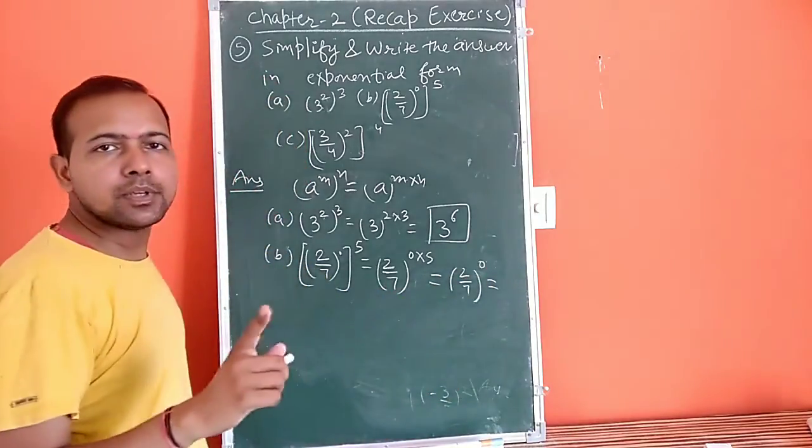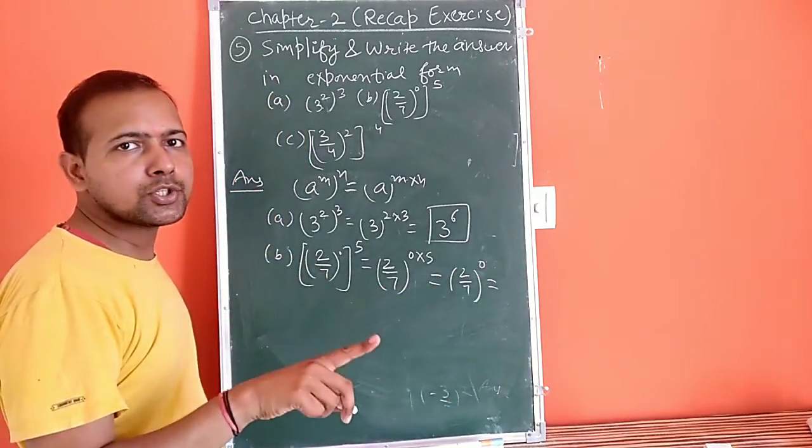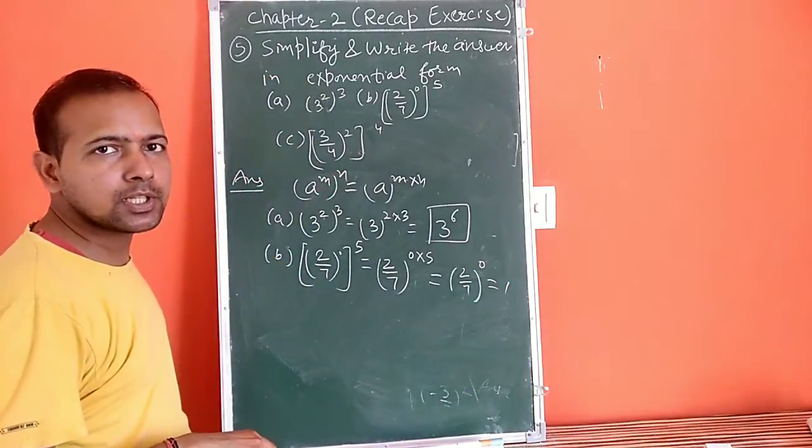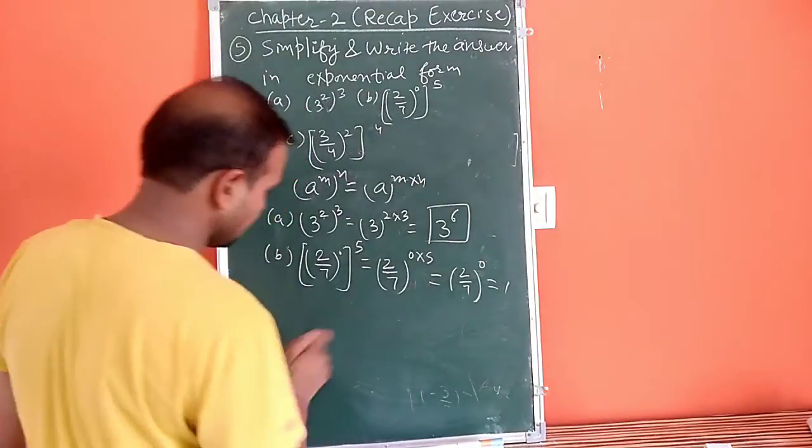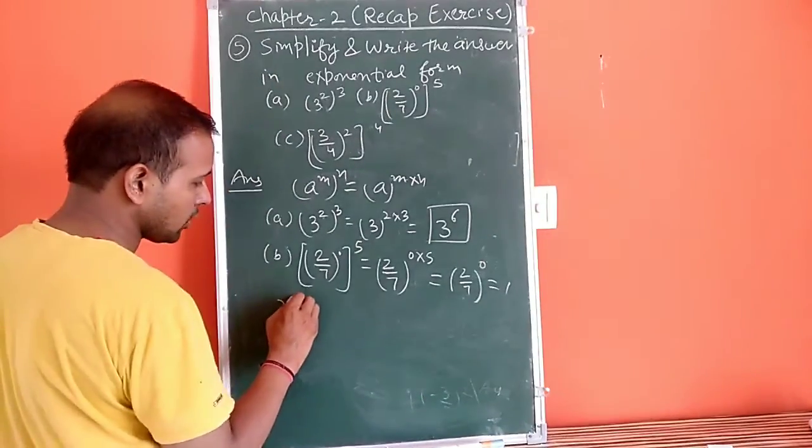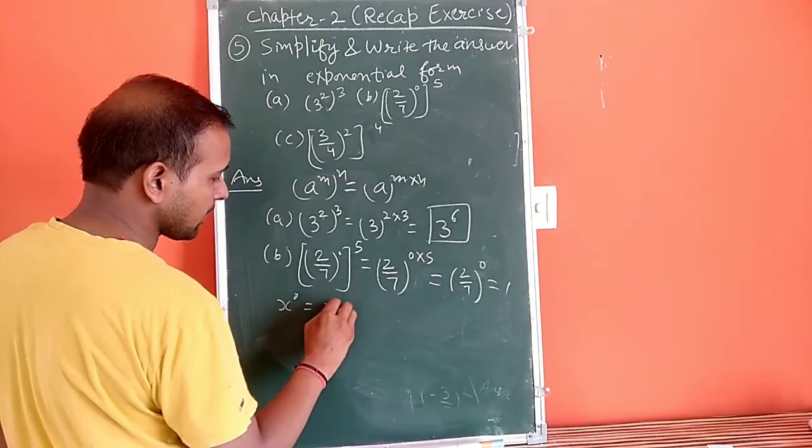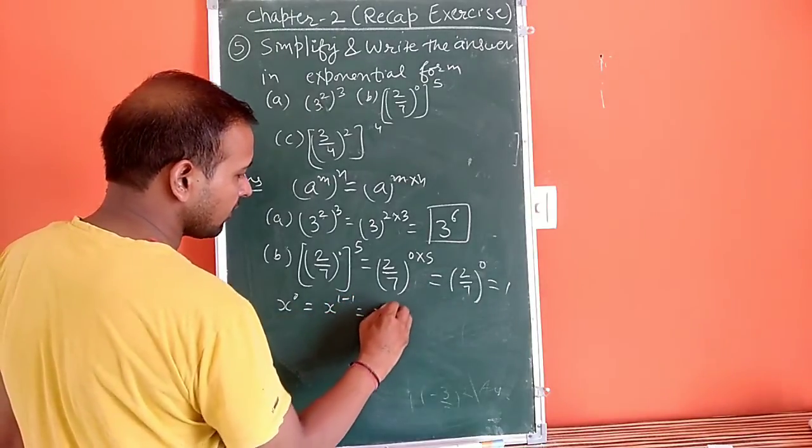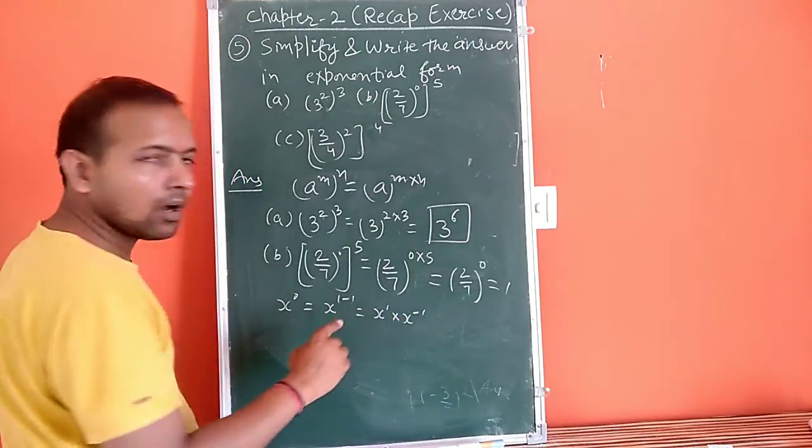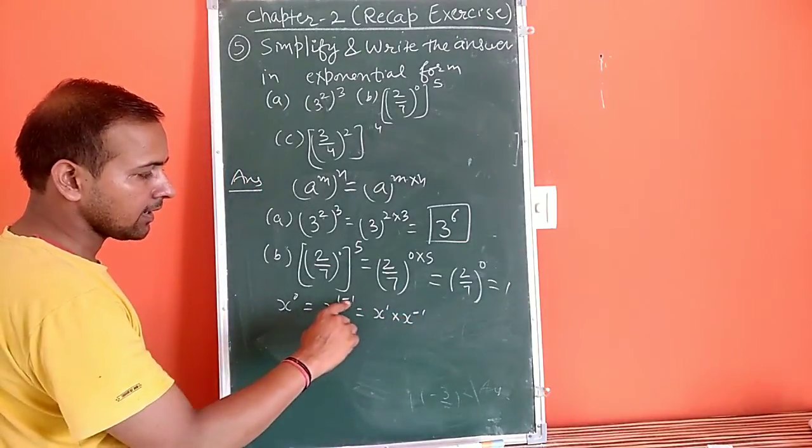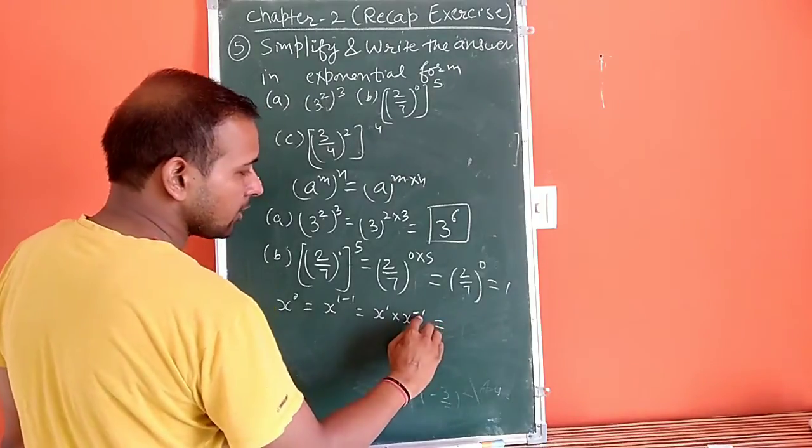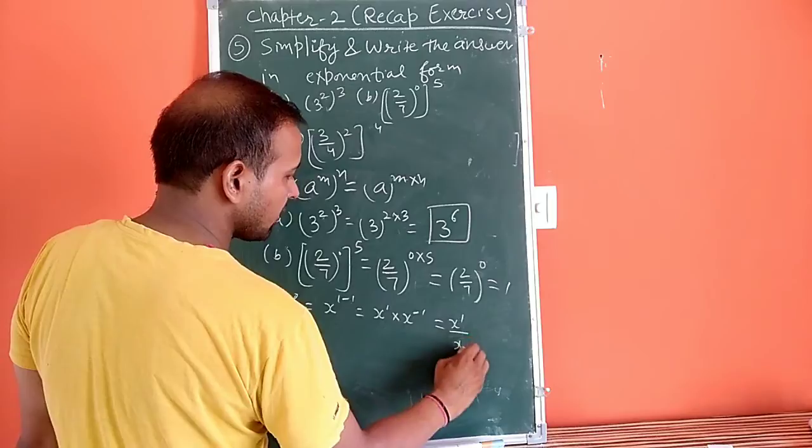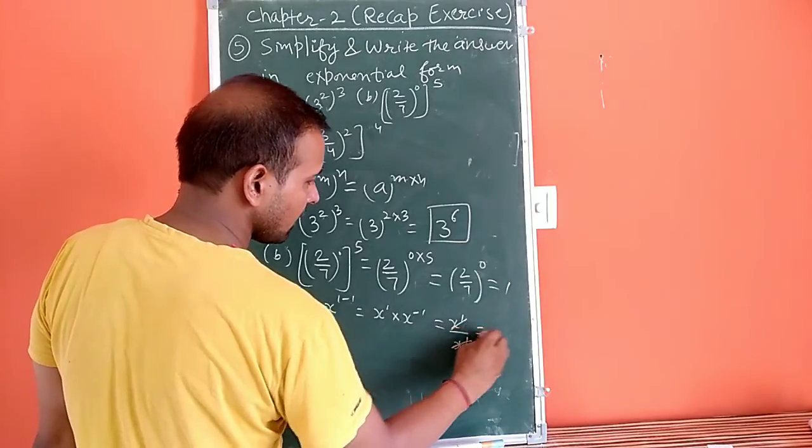So we have a to the power 0. When we have power 0, we can consider it as 1. If you remember, if we have a to the power 0, then we have power 0 equals 1. We can do x to the power 1 multiply by x to the power minus 1. Using law of exponents, x to the power minus 1 is denominator, so x to the power 1 divided by x to the power 1. x to the power 1 over x to the power 1 equals 1.